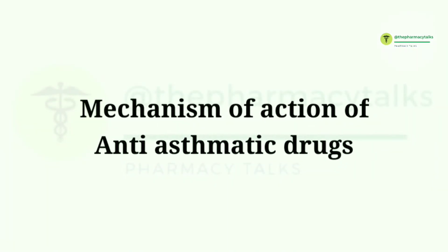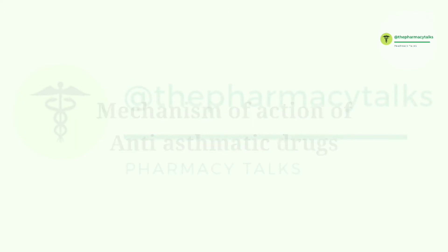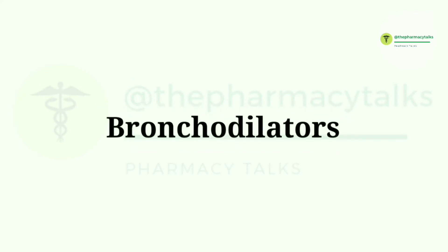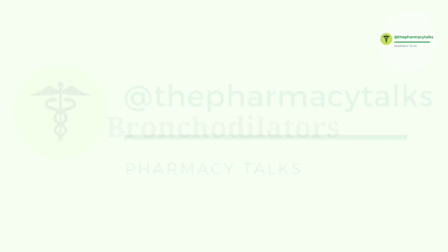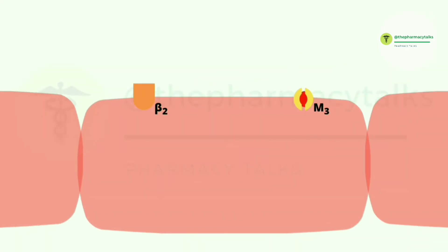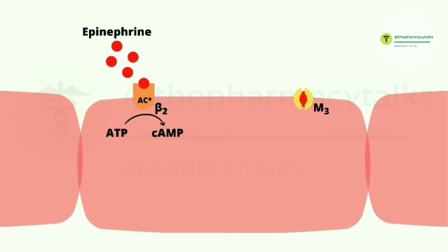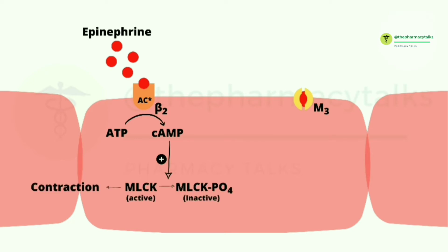Now we'll discuss the mechanism of action of anti-asthmatic drugs one by one. Firstly, the mechanism of action of bronchodilators — these are drugs which cause relaxation of bronchial smooth muscle. One drug target is the beta-2 receptor. In normal physiology, epinephrine binds to this receptor and activates adenylyl cyclase, converting ATP into cyclic AMP. This causes inactivation of myosin light chain kinase, which is responsible for contraction. Thus beta-2 receptor agonists dilate bronchial smooth muscles.